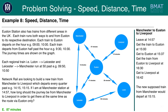We're going to leave at 14.57 and get the train to Euston at 15.00. We will get to Euston at 15.37. We will then have to wait until half past the hour to get the train to Liverpool — that will be at 16.30 — and we will therefore get to Liverpool at 16.42. The new supposed direct train from Manchester would depart at 15.15, so it would have to be 87 minutes long to arrive at the same time. The answer is therefore E, 87 minutes.